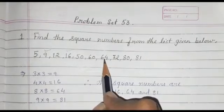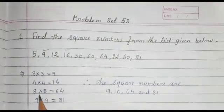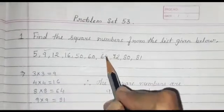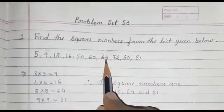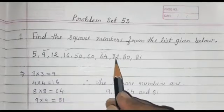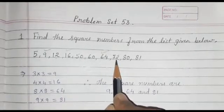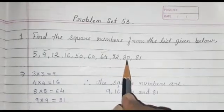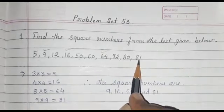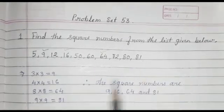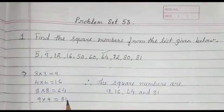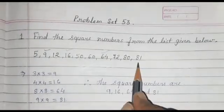64: 8×8=64, so 64 is a square number. Next is 72 — not a square number. 80 — not a square number. And 81 is a square number because 9×9=81.